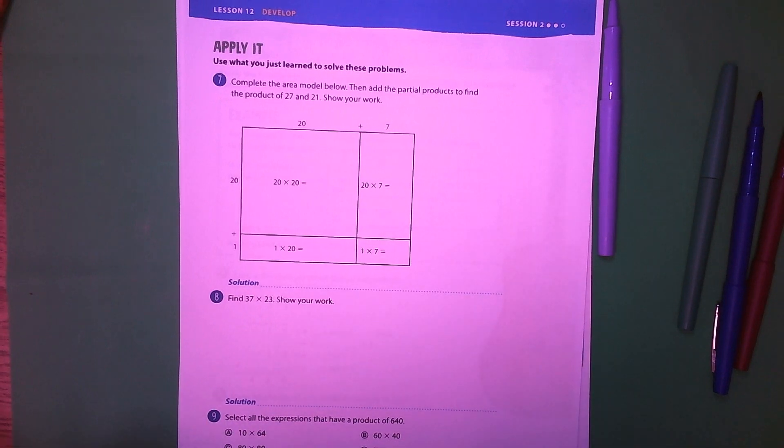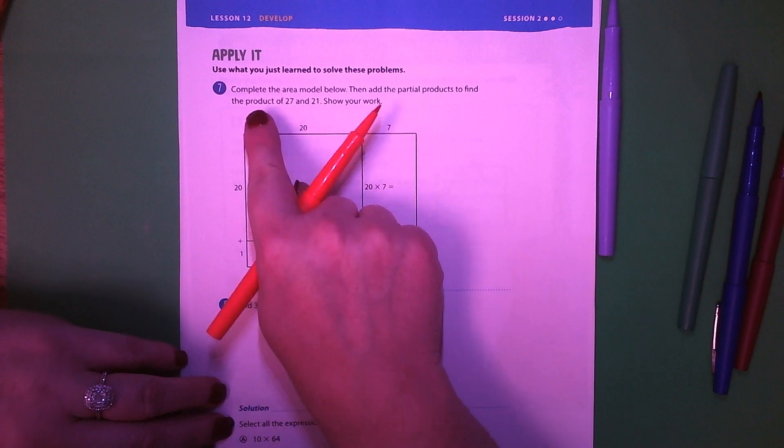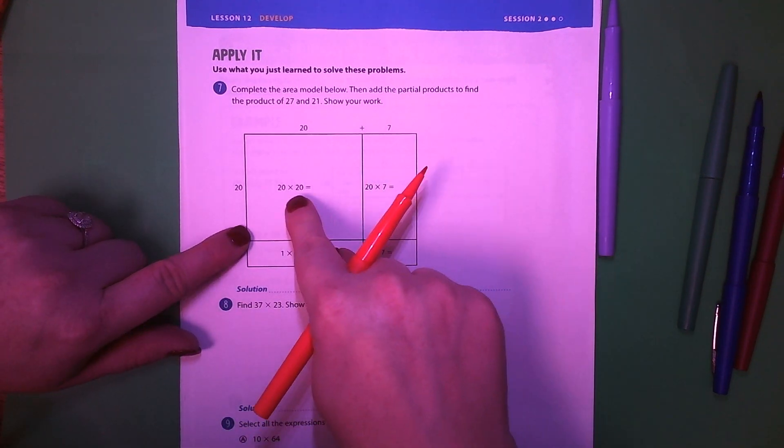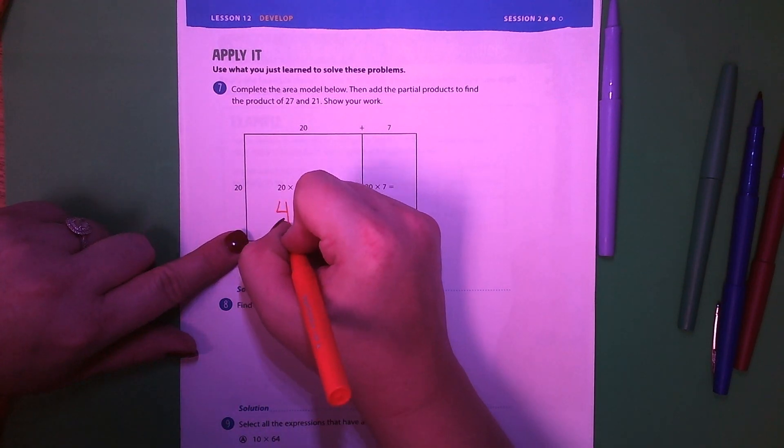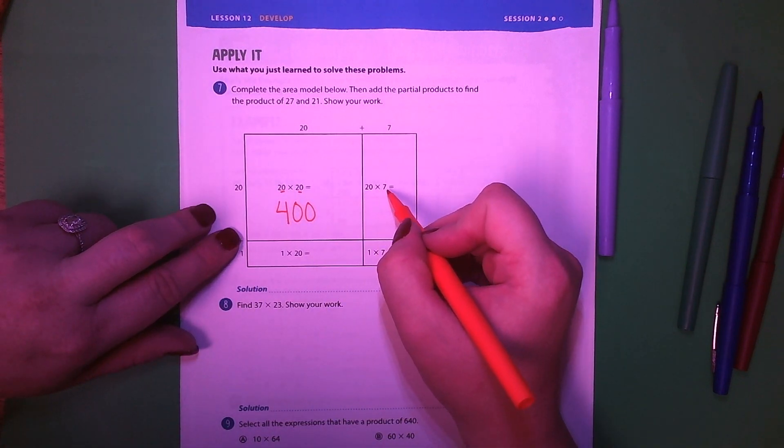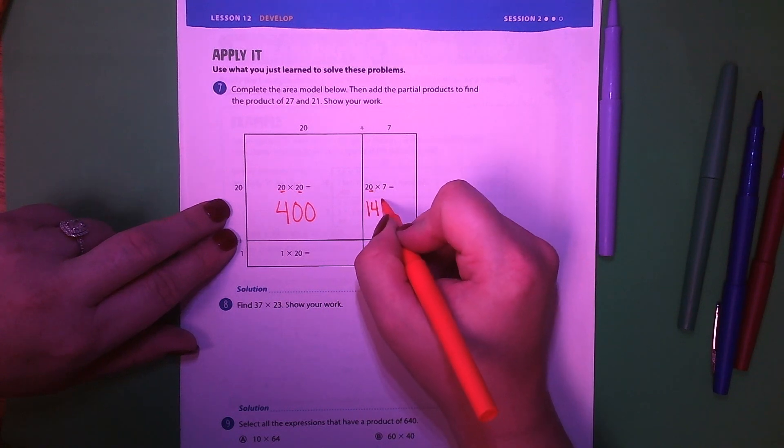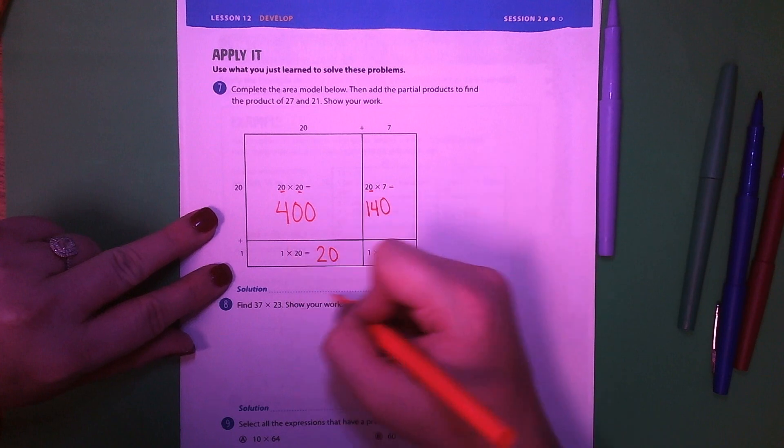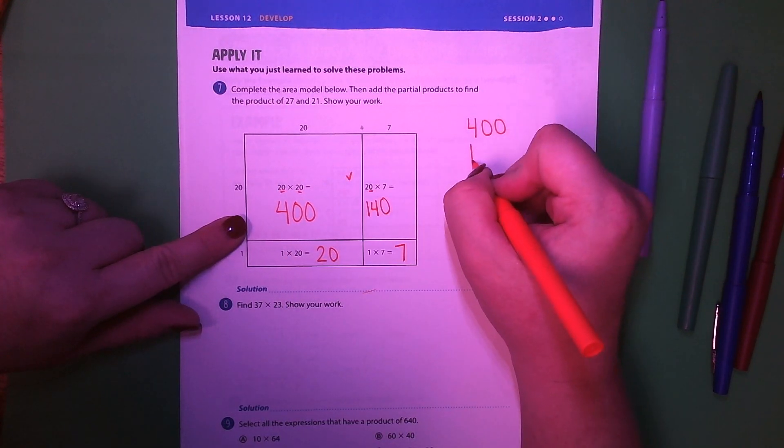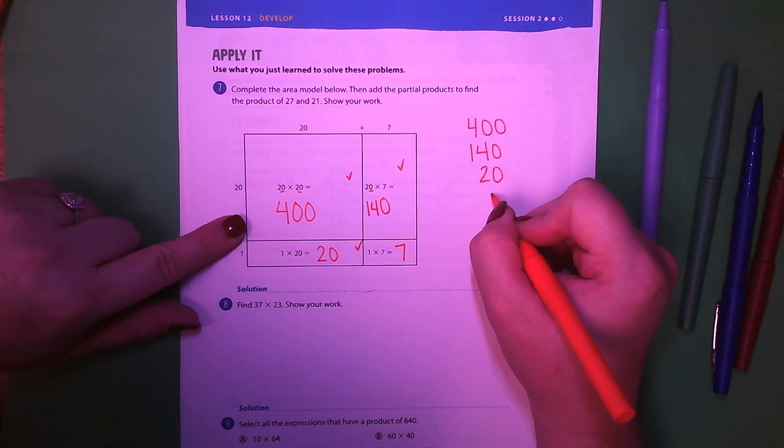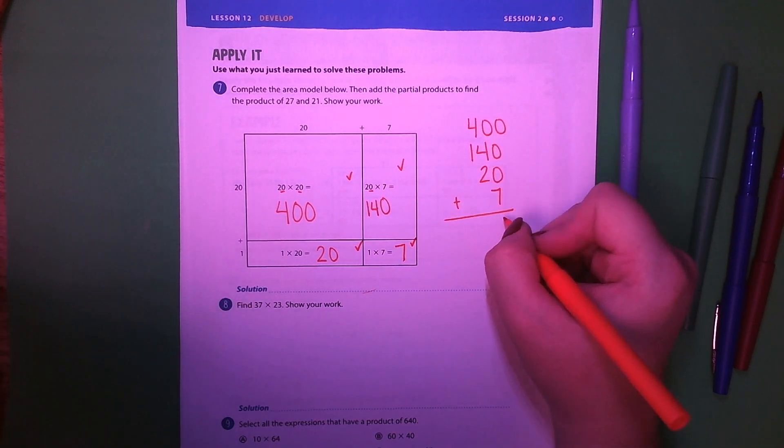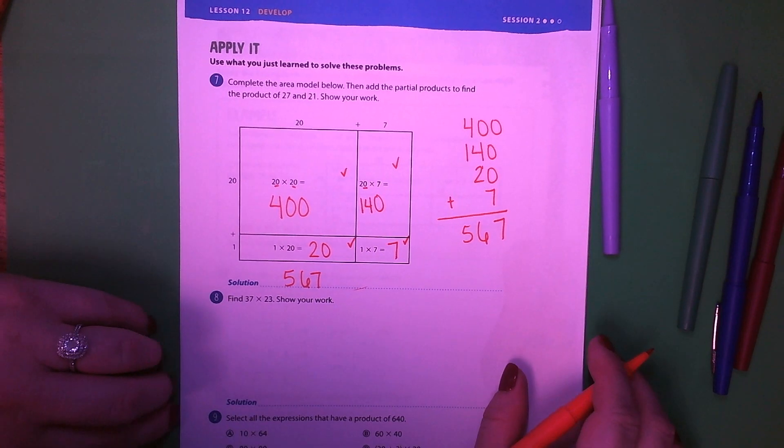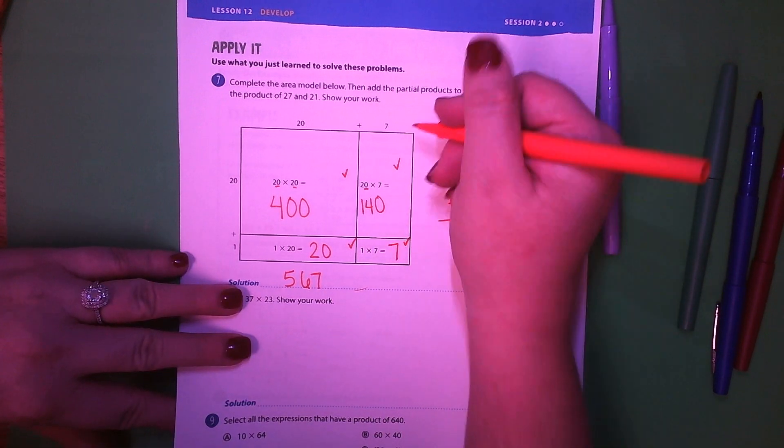Alright. We're going to take a look at number 7 on page 260. Complete the area model below. Then add the partial products to find the product of 27 and 21. Show your work. So they've already put the numbers in the chart for us. So 20 times 20. So 2 times 2 is 4. And we've got two zeros left. So it's 400. 20 times 7. So 2 times 7 is 14. Add our zero is 140. 1 times 20 is 20. And 1 times 7 is 7. Now I need to add all of those together. So 400, 140, 20, 7. So we've got 7, 4, 5, 6, 4, 5. So 567. And we're not going to do the partial products on this one. There's not enough room.